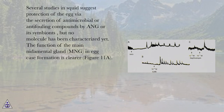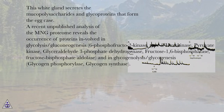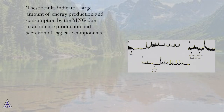The function of the main nidimental gland, MG, in egg case formation is clearer, figure 11a. This white gland secretes the mucopolysaccharides and glycoproteins that form the egg case. A recent unpublished analysis of the MG proteome reveals the occurrence of proteins involved in glycolysis/gluconeogenesis — 6-phosphofructo-2 kinase, type 2 hexokinase, pyruvate kinase, glyceraldehyde-3-phosphate dehydrogenase, fructose 1,6-bisphosphatase, fructose-phosphate aldolase — and in glycogenolysis/glycogenesis, glycogen phosphorylase and glycogen synthase. These results indicate a large amount of energy production and consumption by the MG due to an intense production and secretion of egg case components.